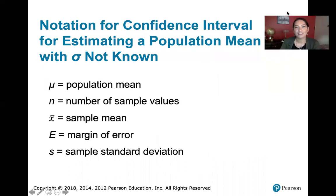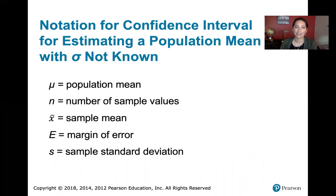First let's review some notation for confidence intervals. This is notation for estimating a population mean when the population standard deviation sigma is not known. Mu represents the population mean — that's the variable we're trying to estimate. N is the sample size, x bar is the sample mean, B is the margin of error, and S represents the sample standard deviation.